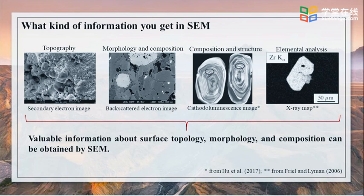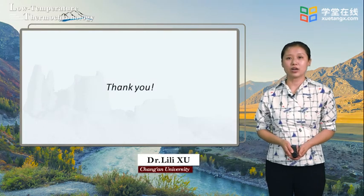From the collection of secondary electrons, backscattered electrons, cathodoluminescence, and characteristic X-ray signals, valuable information about surface topology, morphology, and composition can be obtained by scanning electron microscope. The details about the generation of each signal will be introduced next time. That's the end of the lecture today. Thank you for your attention. See you next time.